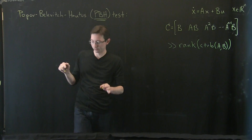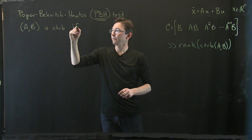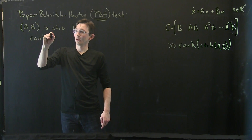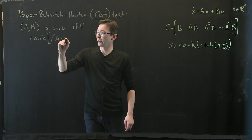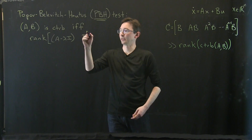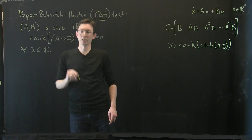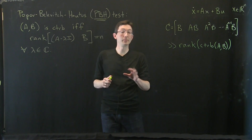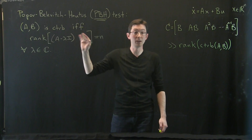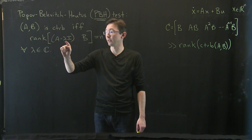The PBH test is extremely simple. The pair (A, B) is controllable if and only if the rank of the matrix [A − λI | B] — that's an n×n matrix concatenated with B, our input actuation matrix — equals n for all λ in the complex plane.